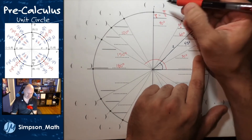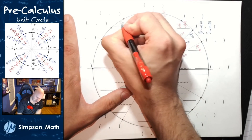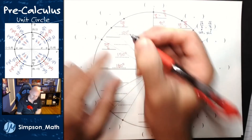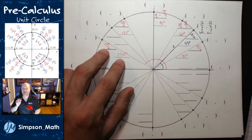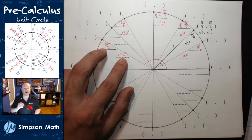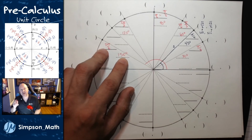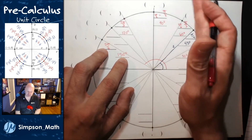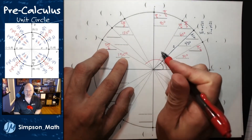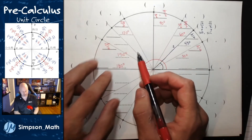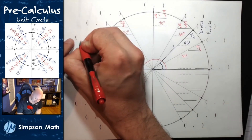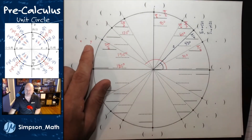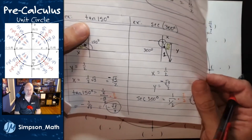Notice how I just converted 150 degrees to radians. I did not multiply by pi over 180. Instead, I drew 150 in standard position and just counted out the radians. We're going to get really good at this. Back to finding exact values: if I can find the x value, then I've found cosine. If I can find the y value, then I have found sine. If I take y and put it over x, that gives me the tangent value.